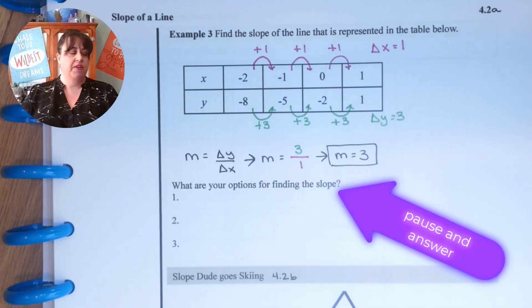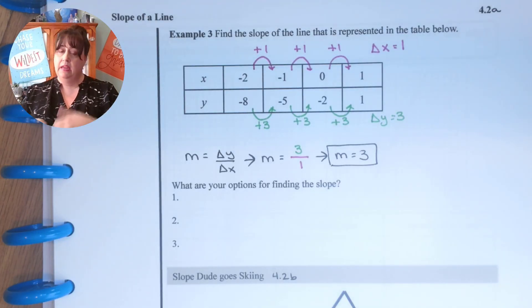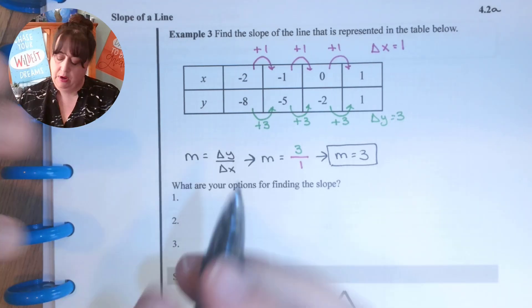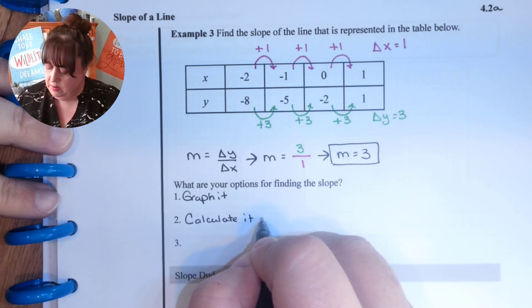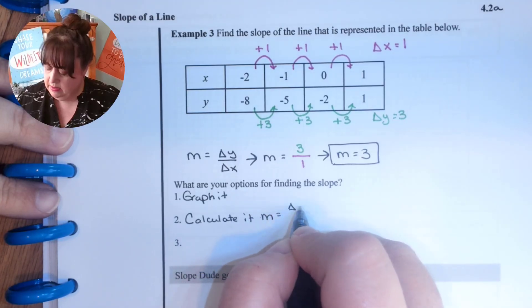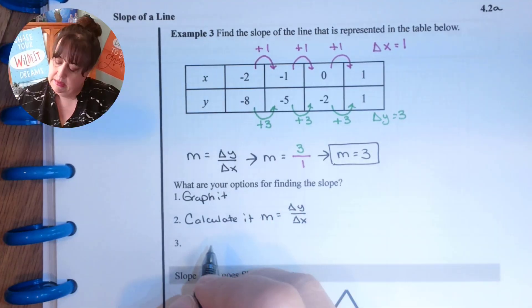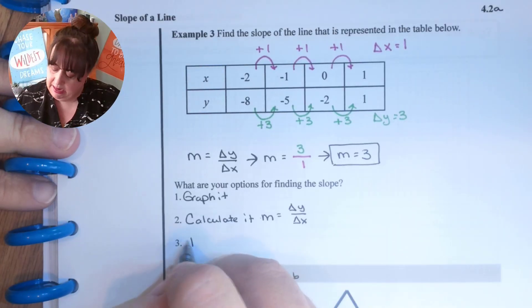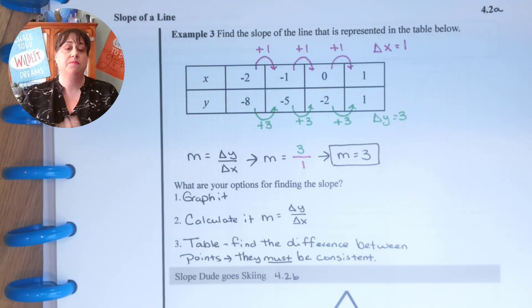So what are our options for finding a slope? We did three different things. The first one was we could graph it. The second one, we could calculate it. So that was m equals delta y over delta x. And then the third way was using a table. And in the table, the differences must be consistent.